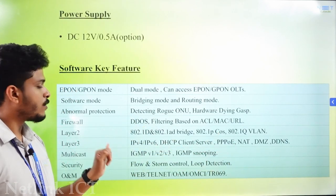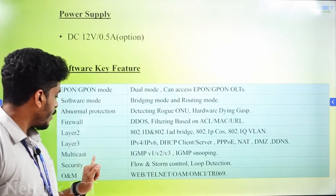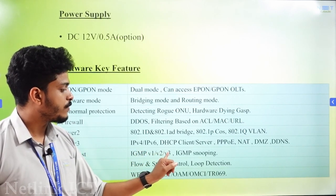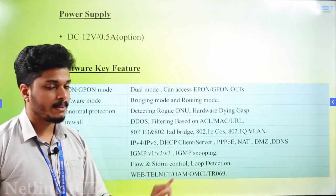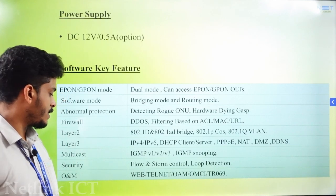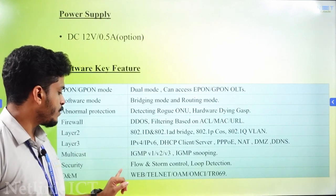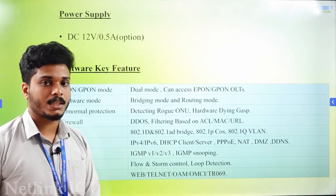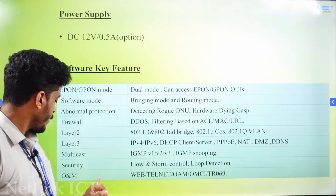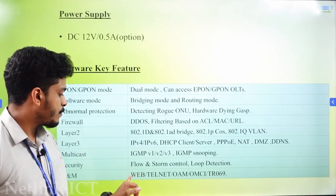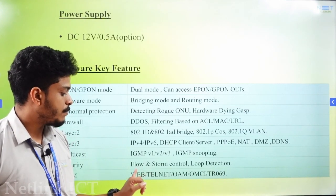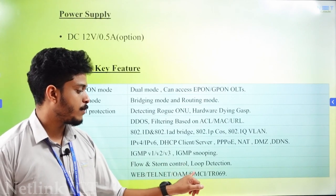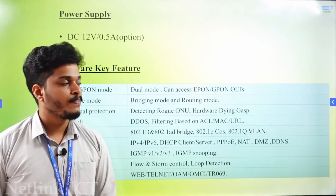These are the software key features. Multicast: IGMP V1, V2, V3, IGMP Snooping. Security: Flow and Storm Control, Loop Detection, and security controls. O&M: Web, Telnet, OAM, OMCI, TR-069.